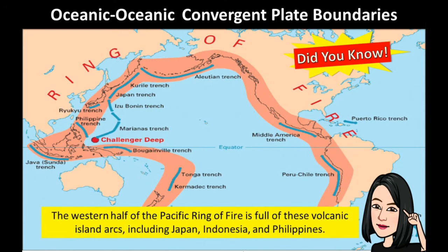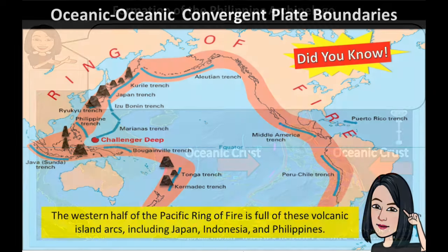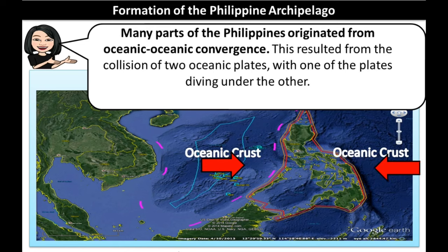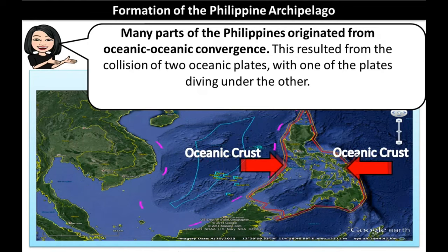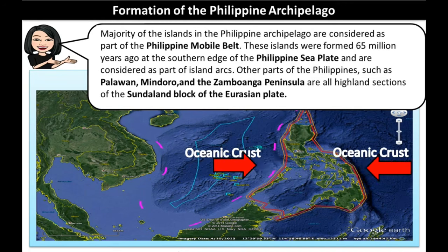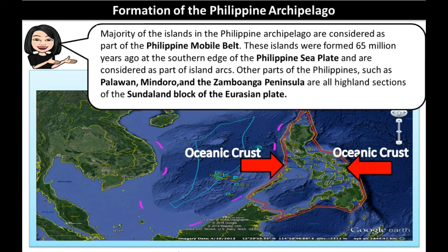Did you know? The western half of the Pacific Ring of Fire is full of these volcanic island arcs, including Japan, Indonesia, and Philippines. Many parts of the Philippines originated from oceanic-oceanic convergence. This resulted from the collision of two oceanic plates, with one of the plates diving under the other. Majority of the islands in the Philippine archipelago are considered as part of the Philippine mobile belt. These islands were formed 65 million years ago at the southern edge of the Philippine Sea Plate and are considered as part of island arcs.